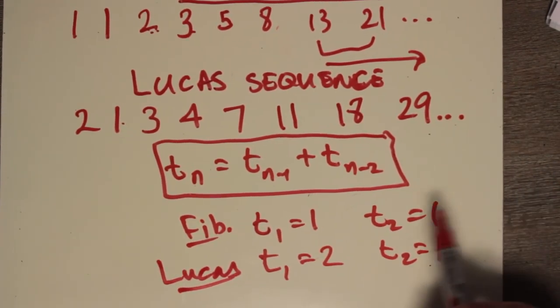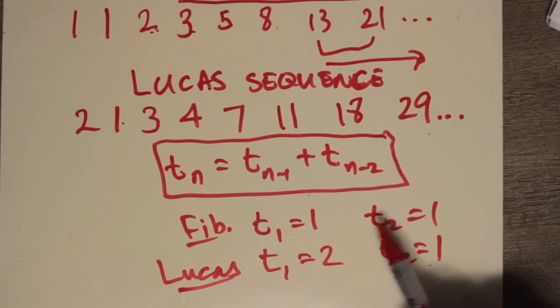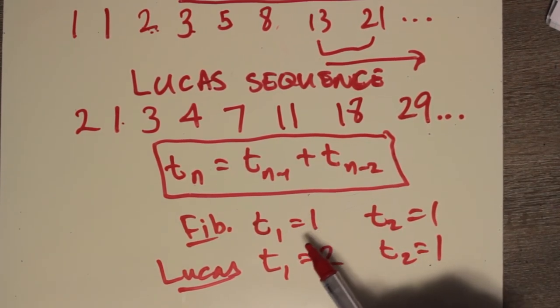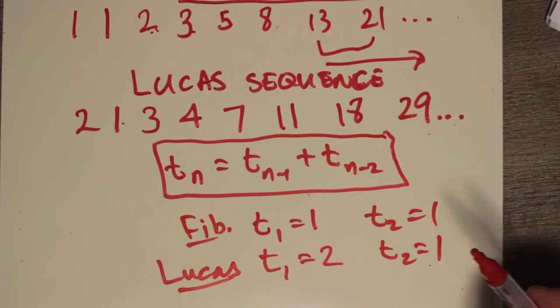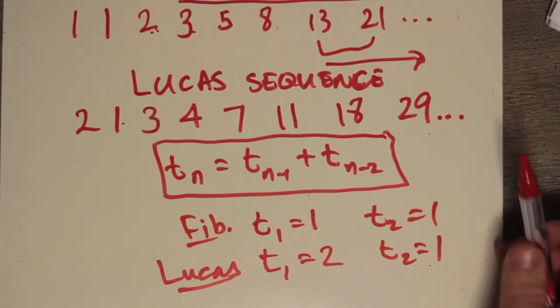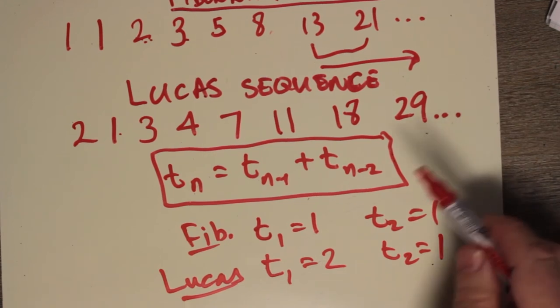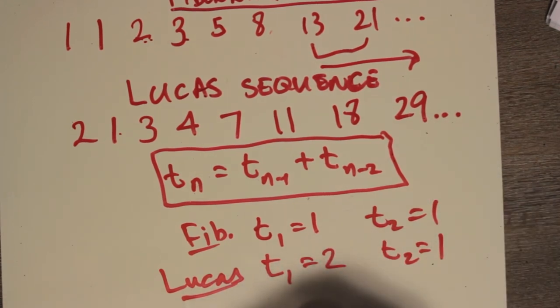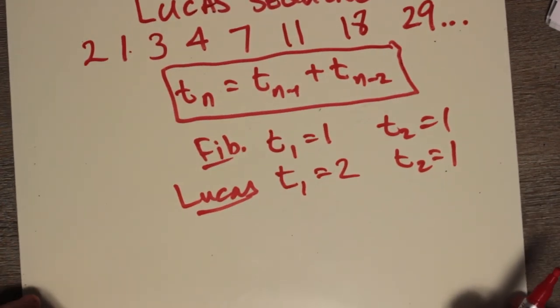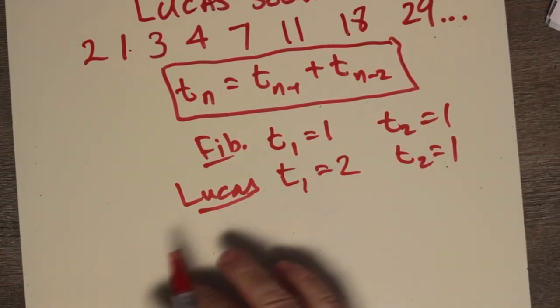So you have to tell me which one they are in order to, in other words, you have to tell me not just the first term. You have to tell me the first two terms which give me the formula that is desired. So that's the Fibonacci sequence and the Lucas sequence. Now, of course, you can have any sequence following this rule that you want.